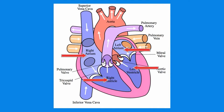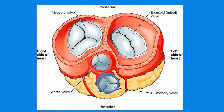Your heart is composed of four chambers. The top chambers are called the atriums and the bottom chambers are called ventricles. In between each chamber are valves. The valves control the flow of blood — they allow blood to flow in one direction but stop the flow in the opposite direction.